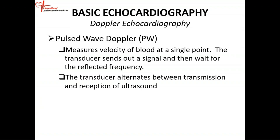The transducer sends out a signal and then waits for that signal to be reflected backwards. Because it's doing this, it can only measure low velocity movements. The transducer or probe itself is alternating between sending out signals and receiving the signal — it alternates between the transmission and the reception of ultrasound.